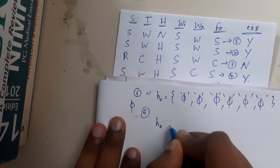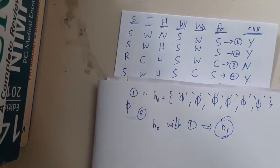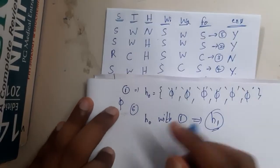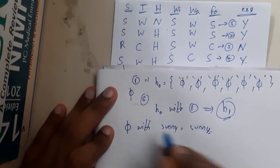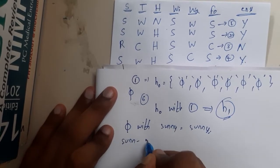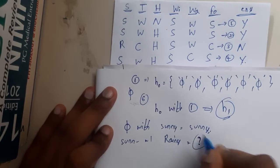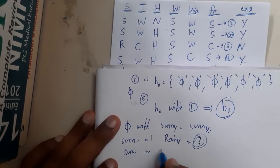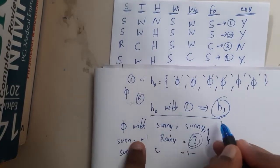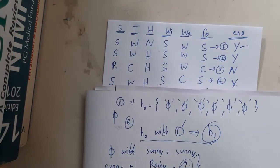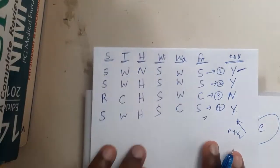The next step is comparing h0 with the first row to get h1. The comparison rules are: φ compared with 'sunny' gives 'sunny'; 'sunny' compared with 'rainy' gives '?' (question mark, meaning not specific); and 'sunny' compared with 'sunny' gives 'sunny'. Also, before starting this step, check whether the row's output is positive — Find-S only works with positive examples.